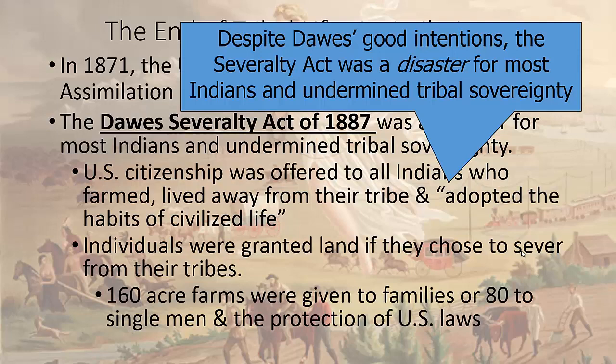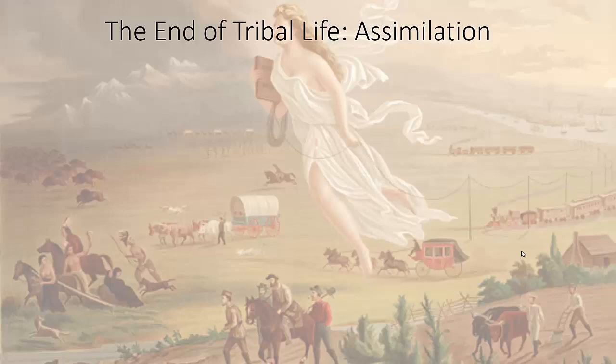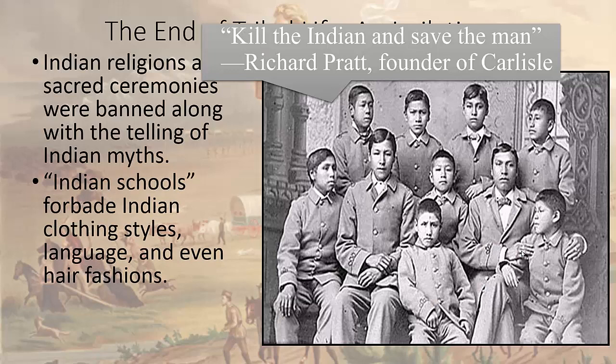The Dawes Severalty Act is passed in the late 1880s, firmly pushing an assimilation policy. Indian religions are often banned, along with sometimes the Indian language. Indian schools like the Carlisle School, founded by Richard Pratt, whose idea was to 'kill the Indian and save the man,' are founded. This is similar to what Australia did with Aboriginal peoples, trying to take them from their tribes — especially those of mixed heritage — and assimilate them into a third race instead.